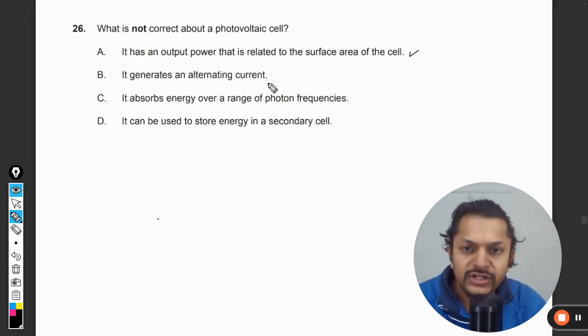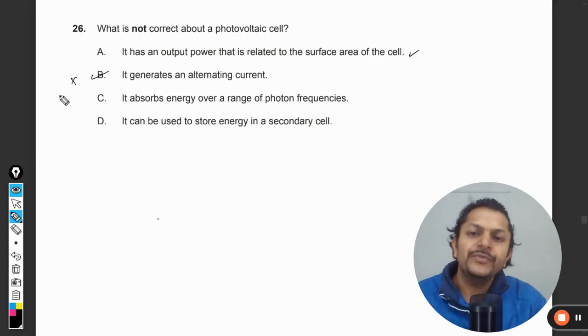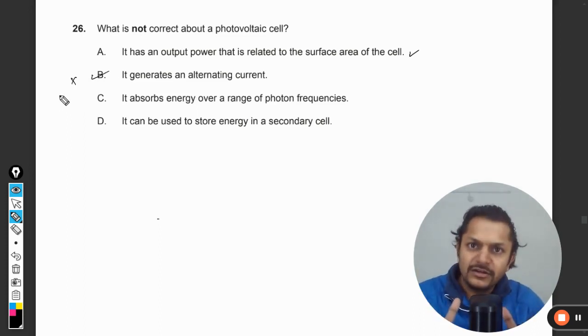It generates an alternating current. This is wrong because a solar cell or photovoltaic cell is always producing DC current. That has to be converted into alternating current later.